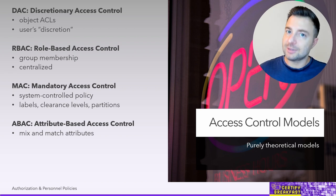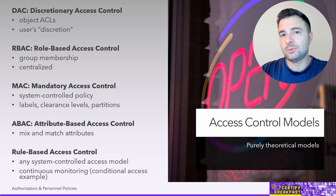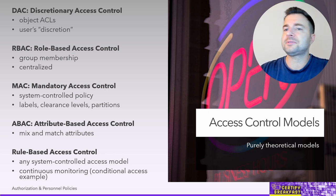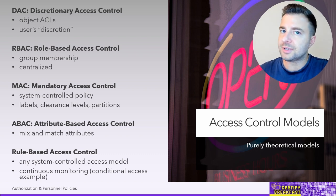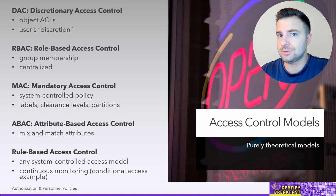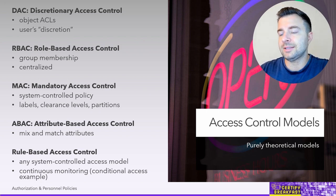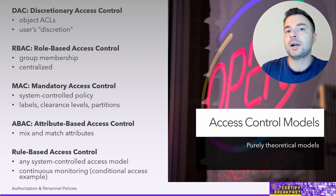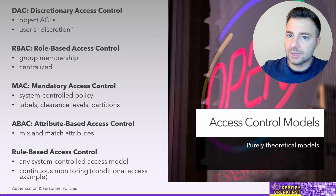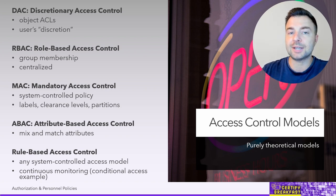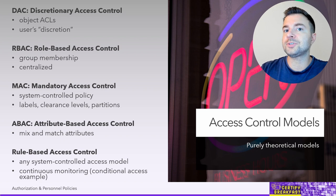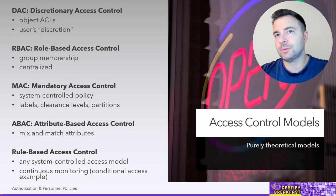Finally, rule-based access control is the most unusual category because it's not exactly separate — it's basically any system controlled by a centralized brain where rules are defined centrally and you have no say over those rules. The number one example in all documentation is a firewall. All users' traffic traverses the firewall but they have no influence over how the firewall rules are defined. The rules are there; you just have to play by them.